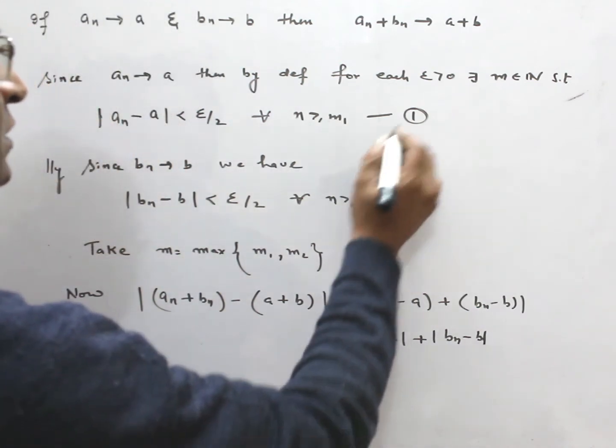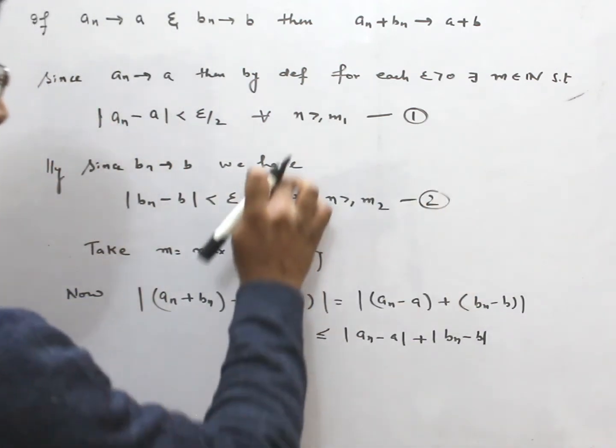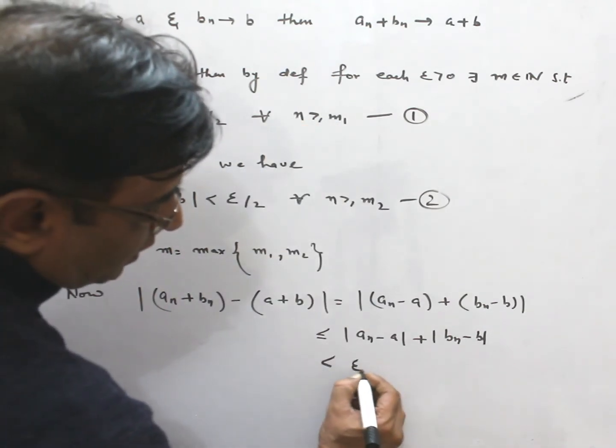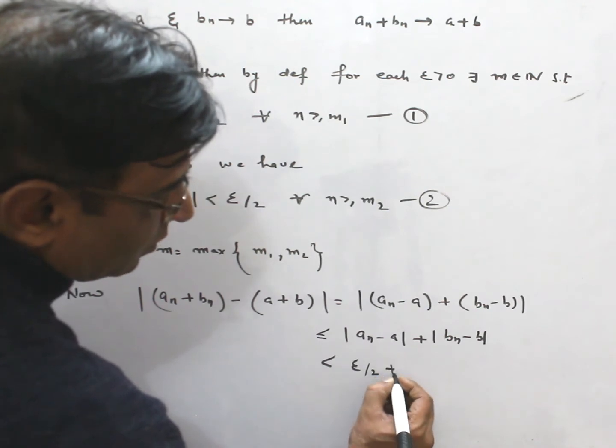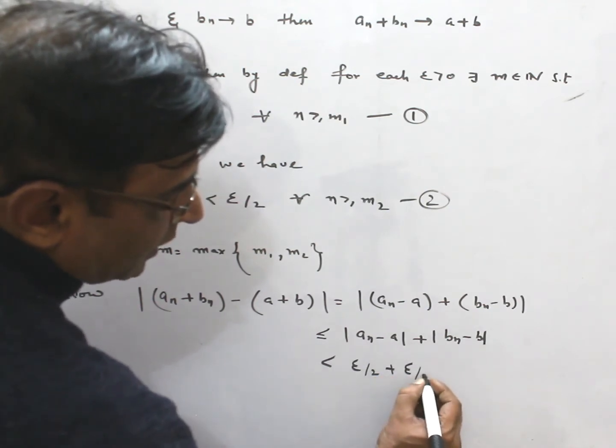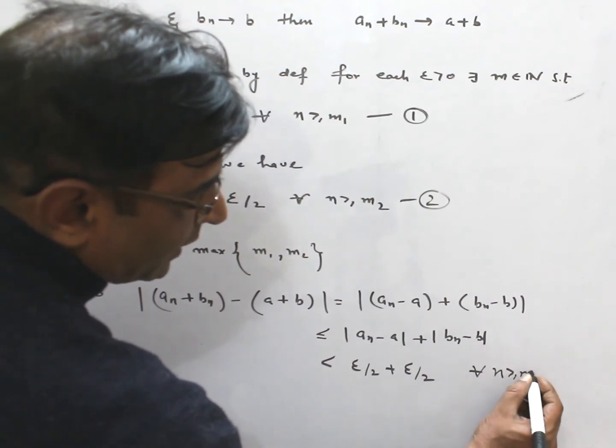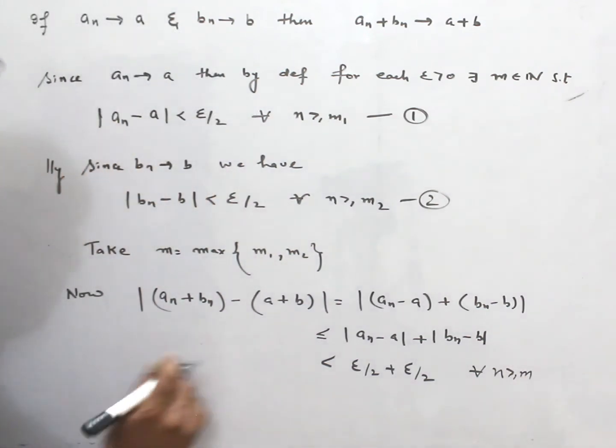Now, this is 1 and this is 2. From 1 and 2, this is ε/2, this is ε/2, for all N greater than M. This means this is epsilon.